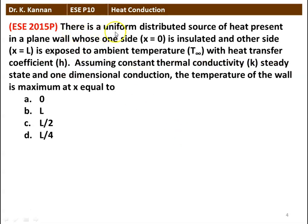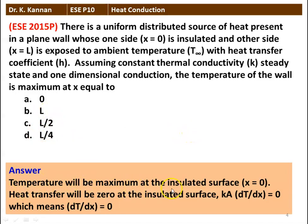Next question: There is a uniformly distributed source of heat in a plane wall whose one side at x = 0 is insulated and the other side at x = L is exposed to ambient temperature T-infinity with heat transfer coefficient H. Assuming constant thermal conductivity, steady state, and one-dimensional heat conduction, the temperature of the wall is maximum at x = 0, L, L/2, or L/4? The temperature is maximum at the insulated surface where x = 0, because the heat transfer is zero there: K·A·(dT/dx) = 0, meaning dT/dx = 0. So maximum temperature occurs at x = 0.